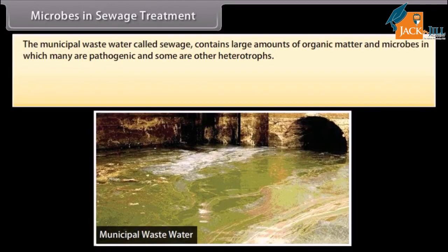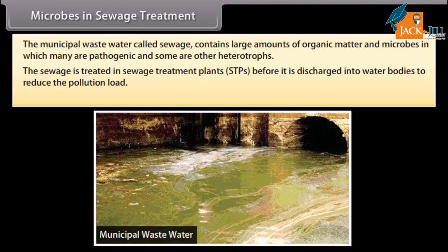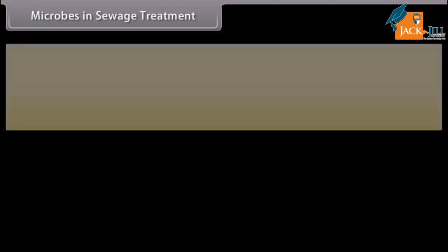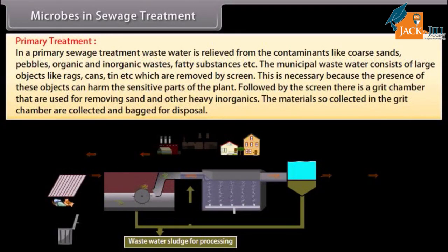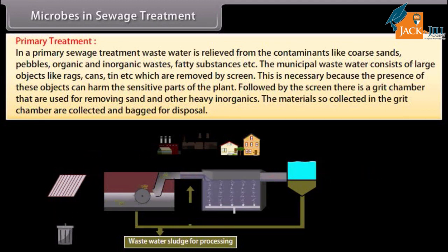Microbes in sewage treatment. Municipal wastewater, called sewage, contains large amounts of organic matter and microbes, many of which are pathogenic and some are other heterotrophs. Sewage is treated in sewage treatment plants before it is discharged into water bodies to reduce the pollution load. The treatment involves two steps. In primary sewage treatment, wastewater is relieved from contaminants like coarse sands, pebbles, organic and inorganic wastes, fatty substances, etc. Municipal wastewater contains large objects like rags, cans, tin, etc.